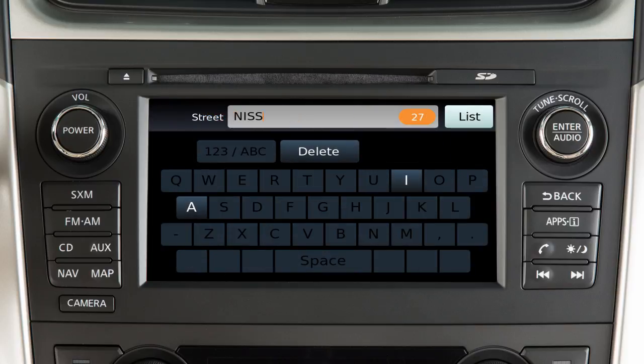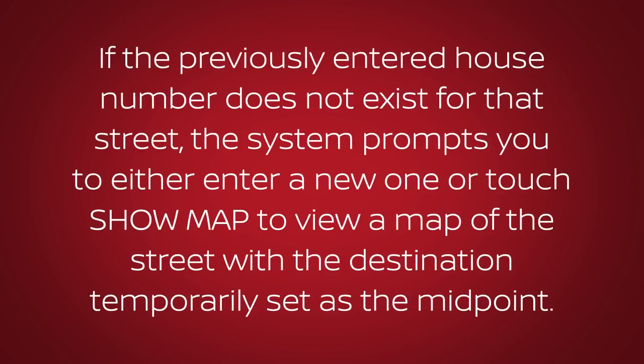The touchscreen keyboard functions like the one used to enter the city name. If the previously entered house number does not exist for that street, the system prompts you to either enter a new one or touch Show Map to view a map of the street, with the destination temporarily set as the midpoint address on that street.